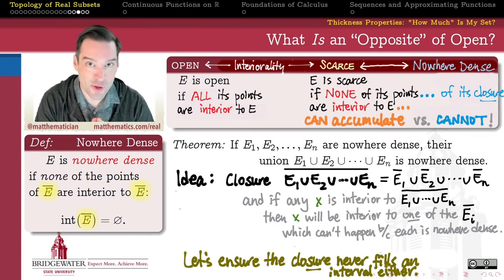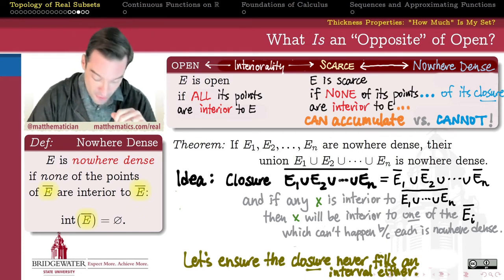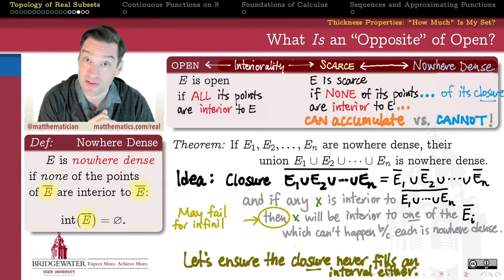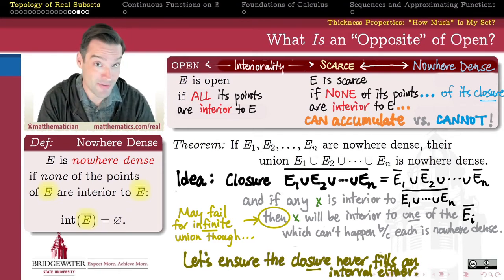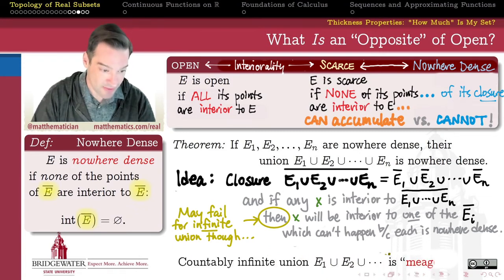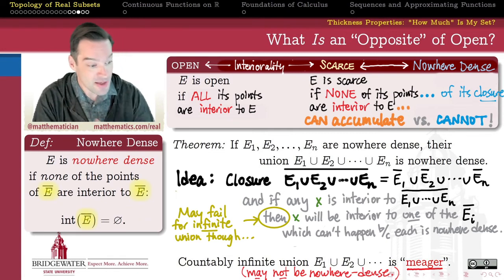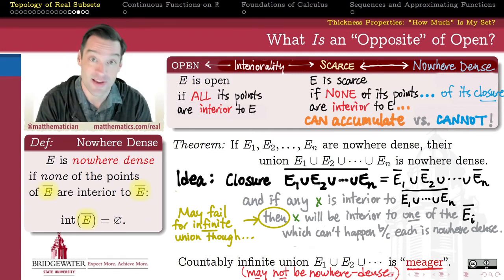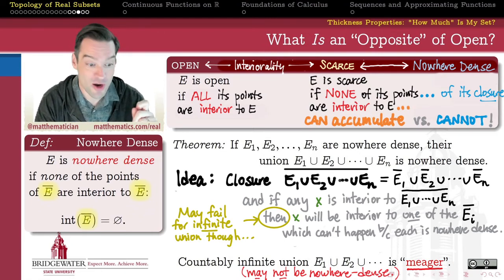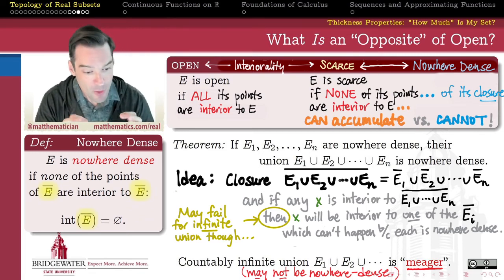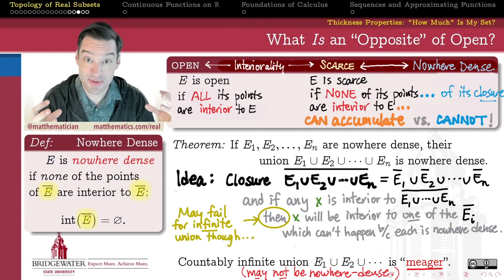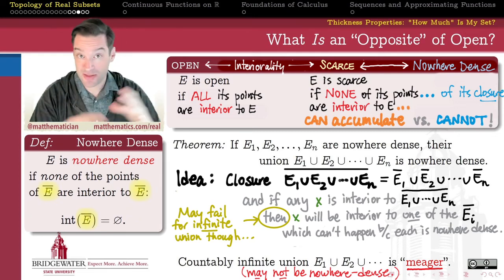Just like many topological properties, what we can take for granted in a finite union is not necessarily true in an infinite union. If I have an infinite collection of nowhere-dense sets and union them together, that union might not be nowhere-dense. But we still like to think about what countably infinite unions of nowhere-dense sets look like, so we give them a different name — we call them meager. A meager subset of a topological space is a countably infinite union of nowhere-dense sets. This will be a really useful way for us to talk about differences between topological spaces.